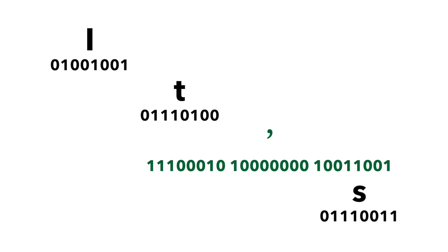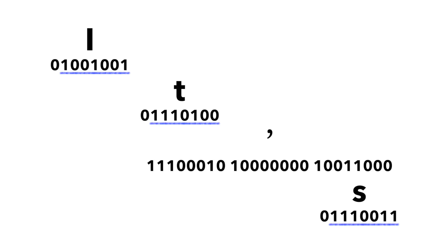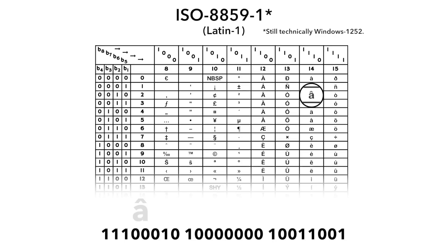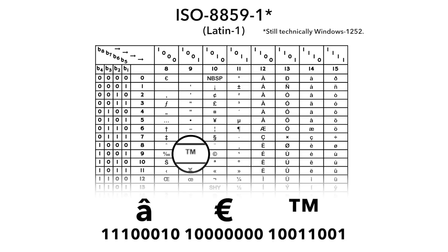Notice that these three bytes all begin with a one — that's how we know they can't be ASCII characters, because ASCII characters all use seven bits, so their eighth bit is always zero. But in Latin-1, when the eighth bit is one, that just means we use the second table. So if we get the wrong idea and think that the email was written in Latin-1 when it was really written in UTF-8, we'll look up those bytes in the Latin-1 table and we'll find... well, here's the first one, and here's the second one, and there's the last one. Look familiar?